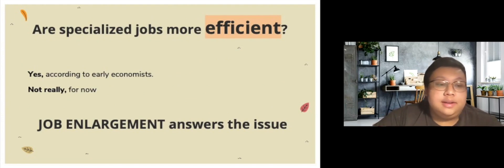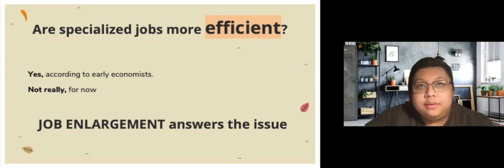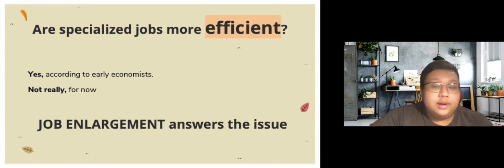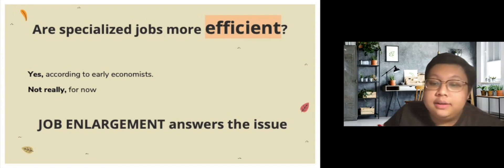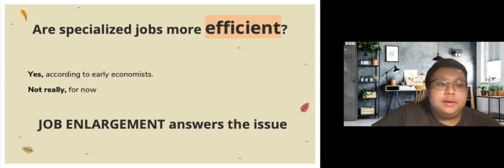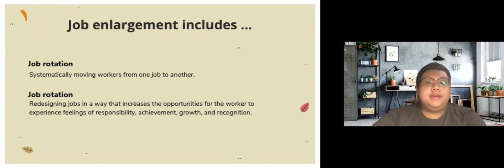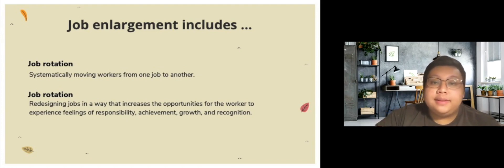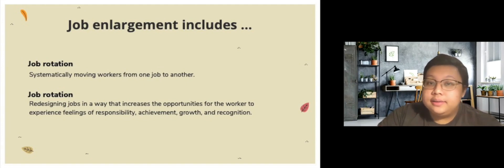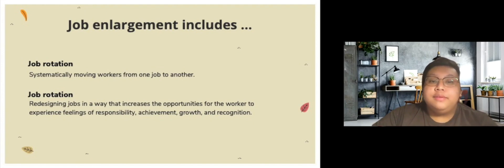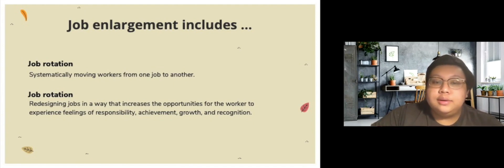Do you think specialized jobs are efficient? According to early economists, yes, but people are changing and evolving, so now it's not really that efficient. That's why we need job enlargement, which means assigning more jobs at the same level. Job enlargement has two components. The first is job rotation, which means systematically moving workers from one job to another. For example, in a factory with a production line, moving a worker from one station to another gives them a new task, preventing them from getting bored with their daily routine.